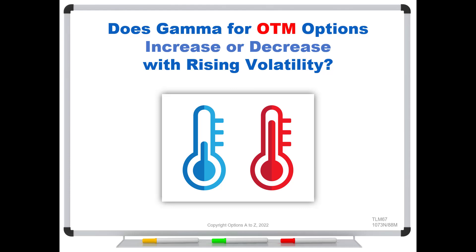So here's another good question for the group. Does gamma for out-of-the-money options increase or decrease with rising volatility?